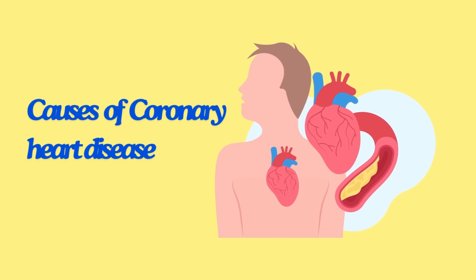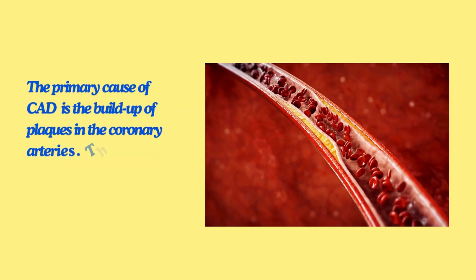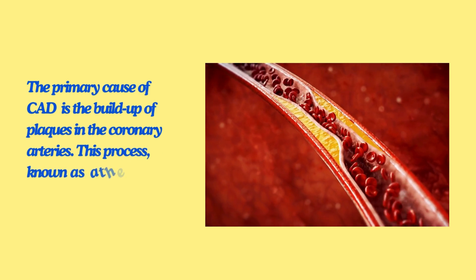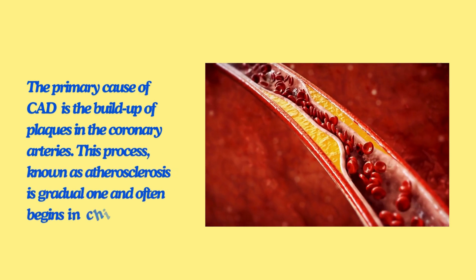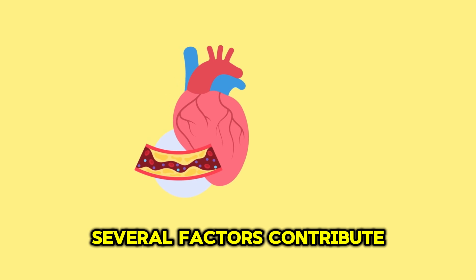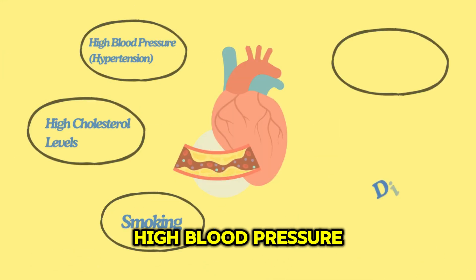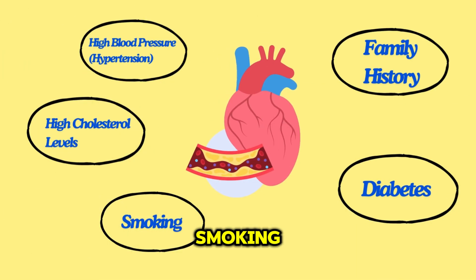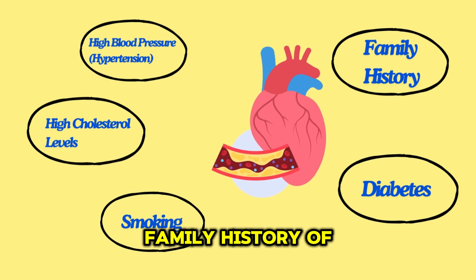Coronary artery disease is primarily caused by the buildup of plaque inside the coronary arteries. This process, known as atherosclerosis, is a gradual one that often begins in childhood. Several factors contribute to plaque formation, including high cholesterol, high blood pressure, smoking, diabetes, and a family history of heart disease.